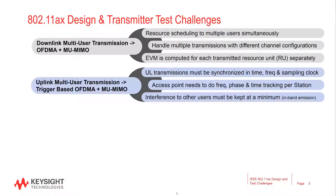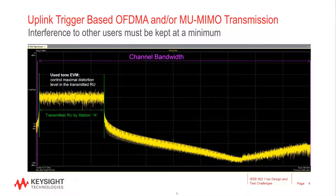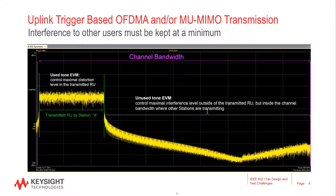In the uplink multi-user transmission, also called trigger-based, each user is assigned a single resource unit by an access point, and multiple users transmit simultaneously. To prevent interference, the packet transmission from each station must start and end at the same time, and they must remain synchronized. The other major challenge is emissions into unallocated resource units. When transmitting in the uplink, each user must occupy only the resource unit they are assigned to. The interference level outside of the transmitted resource unit, which is used by other stations, must be minimized. As a result, a new unused tone EVM or in-band emissions requirement is defined for the uplink.